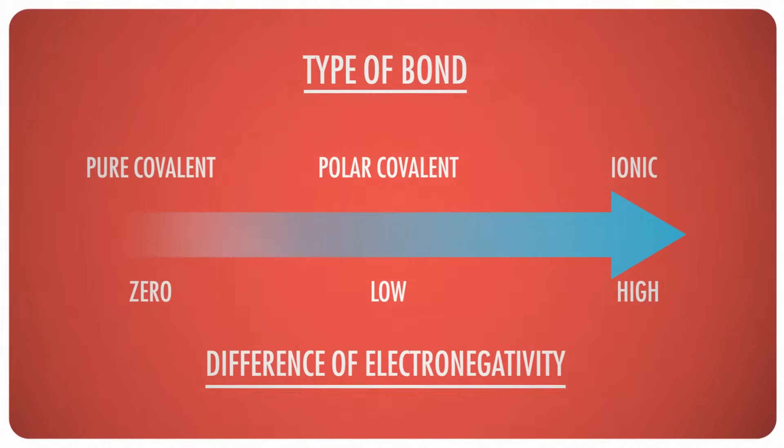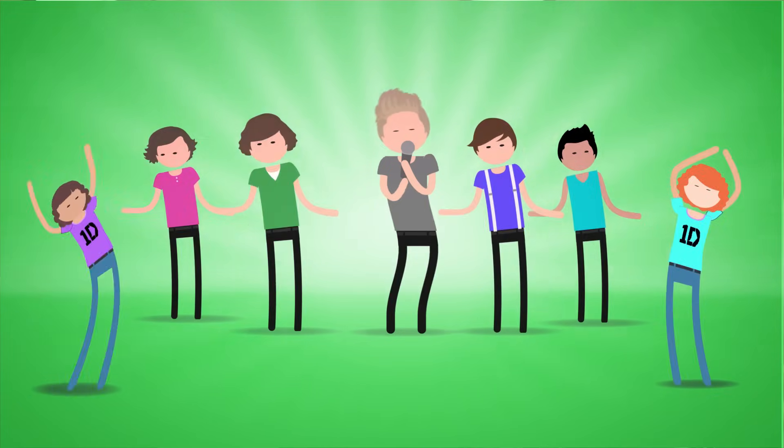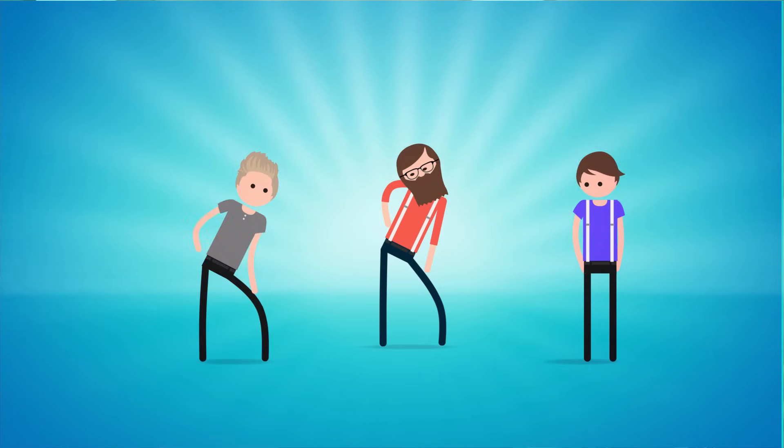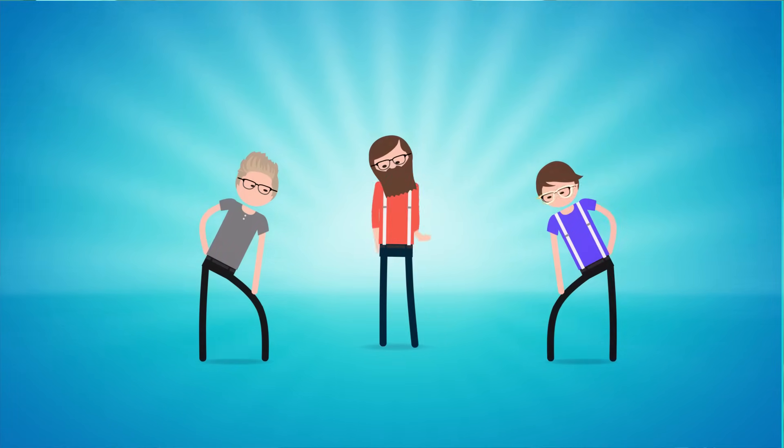Electronegativity increases from left to right, because there are more protons in the atoms, and more protons means more boys in the band. Meanwhile, it decreases as you move from top to bottom, because as the crowd of electrons gets bigger, they start to shield each other from the effects of the protons. What I'm trying to say is that electrons are hipsters. If a bunch of other electrons are into that thing, they're less interested.